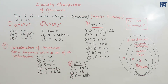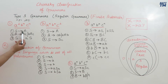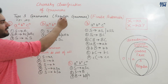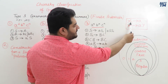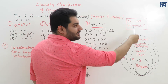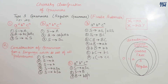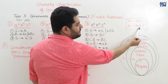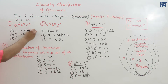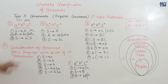In previous videos, we studied five examples where we derived grammars for given languages. Now we test whether they are regular or not. For the language a^i b^n c^n, we built three production rules. Checking if it is regular: S derives a non-terminal A, but in regular grammar rules a non-terminal must be preceded by a terminal. This production does not follow the rules of a regular grammar, so this language is not regular.